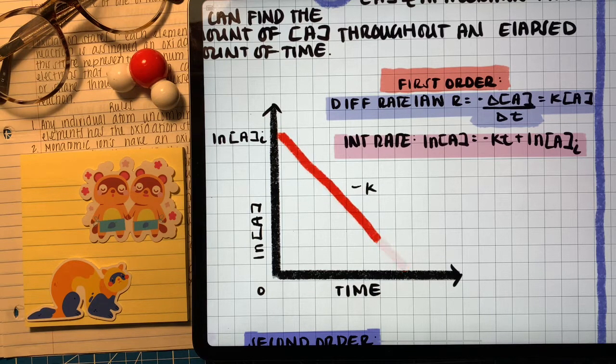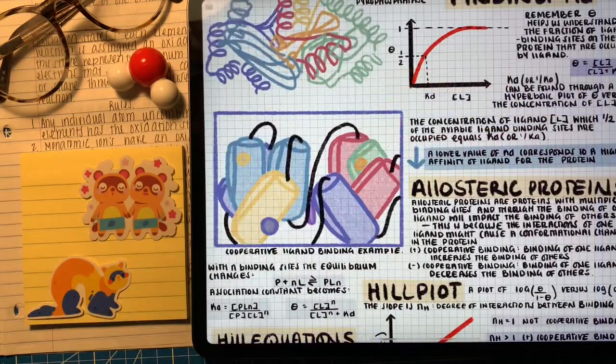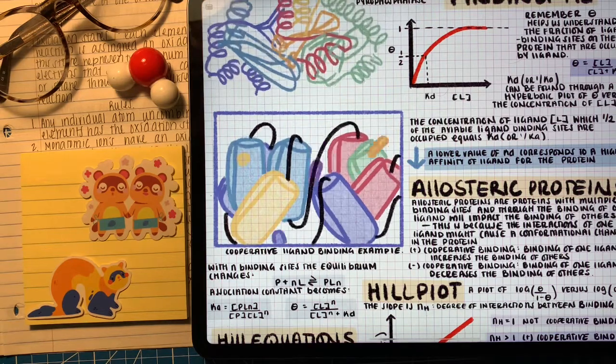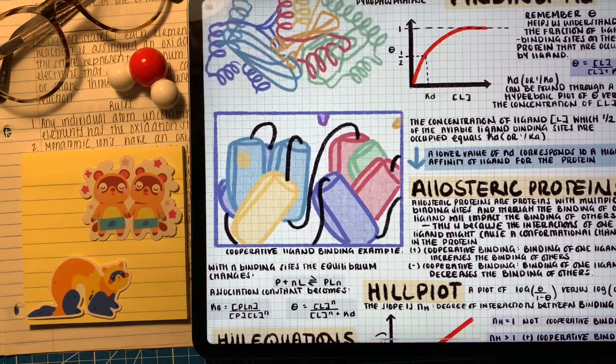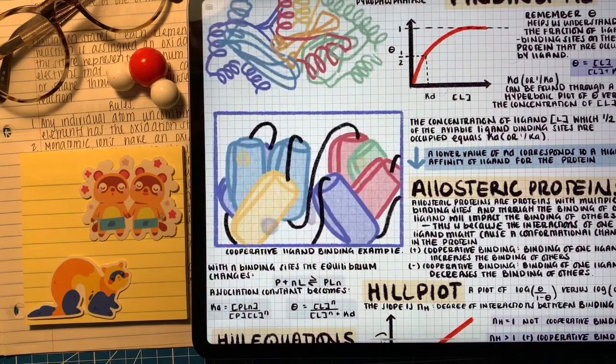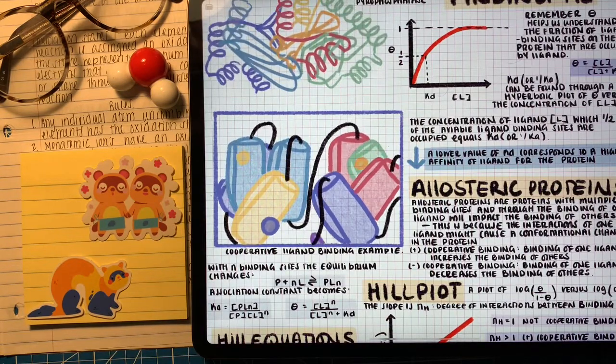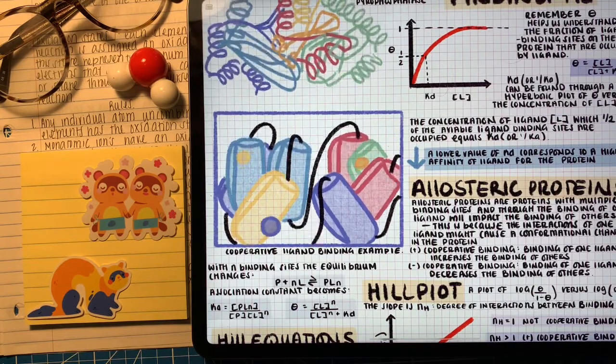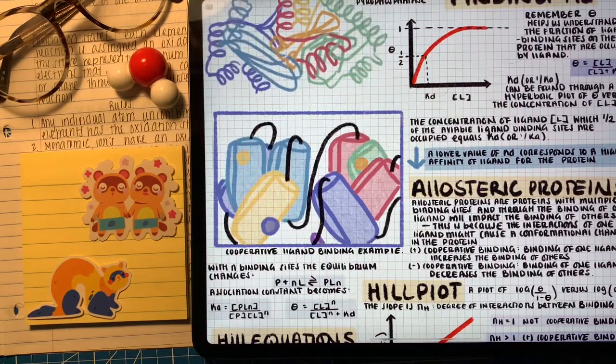And so from this we can find the concentration at any given time throughout the reaction and the slope in this case is also just the negative rate constant. Let's take a second just to breathe because I know I said the words rate and reaction a lot of times in the last few minutes so just take a moment take a breath and then we're going to talk about the second order integrated rate law.